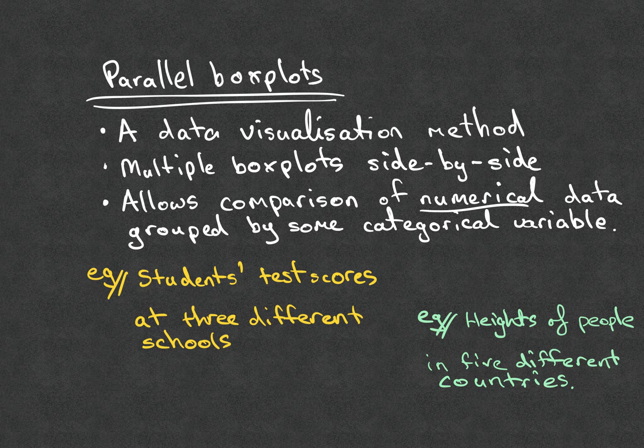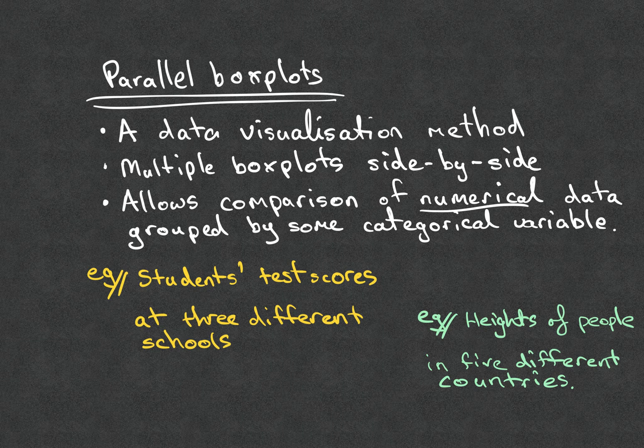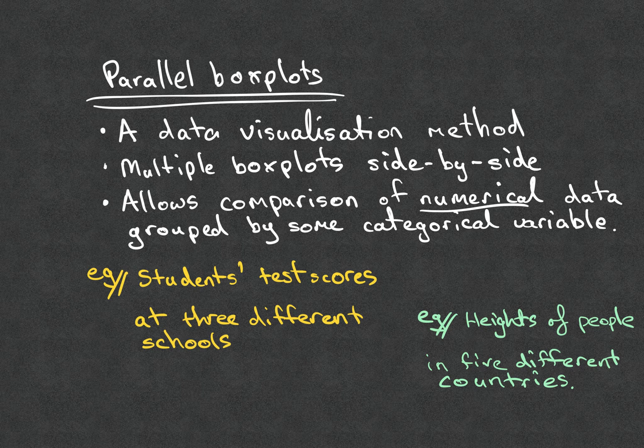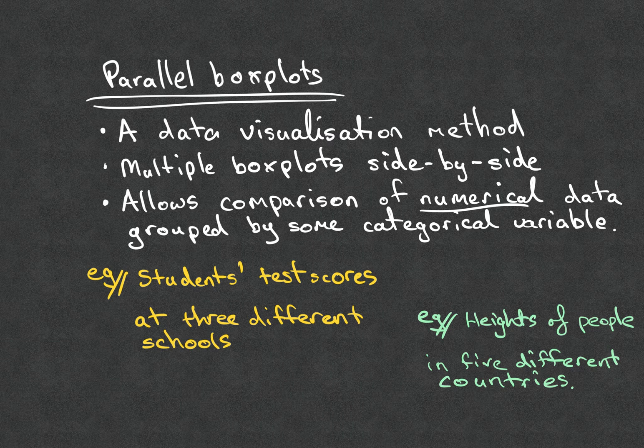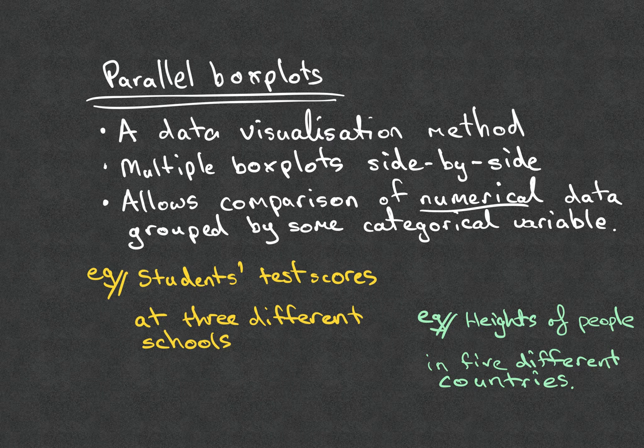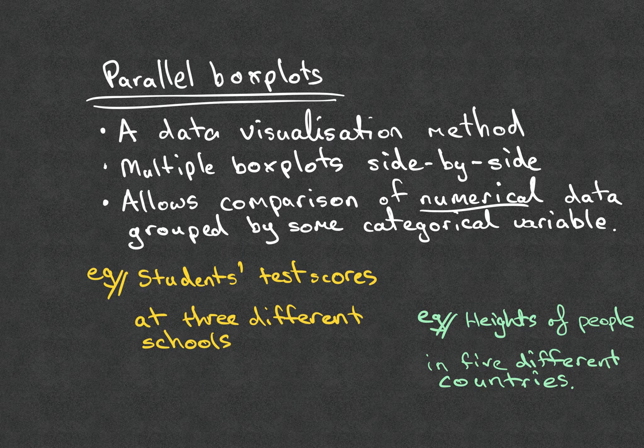First of all, parallel box plots are just another data visualization method. Essentially what it is, is multiple box plots sitting side by side or stacked on top of each other. They allow us to compare numerical data, because box plots show numerical data, but grouped by some categorical variable. So it's essentially a way of looking at certain bivariate data.